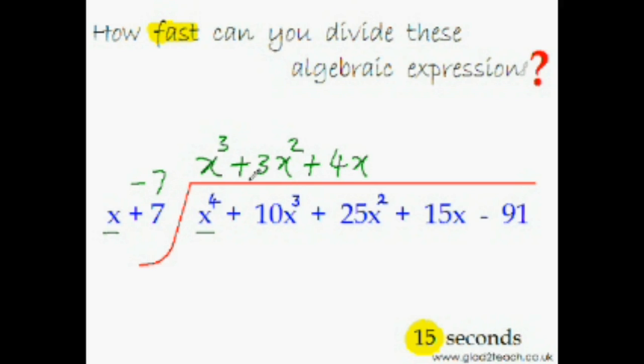Minus 28x plus 15x would be minus 13. Question solved! This is the quotient. And if you want to know the remainder, I can tell you the remainder as well. Minus 7 times minus 13 is plus 91.